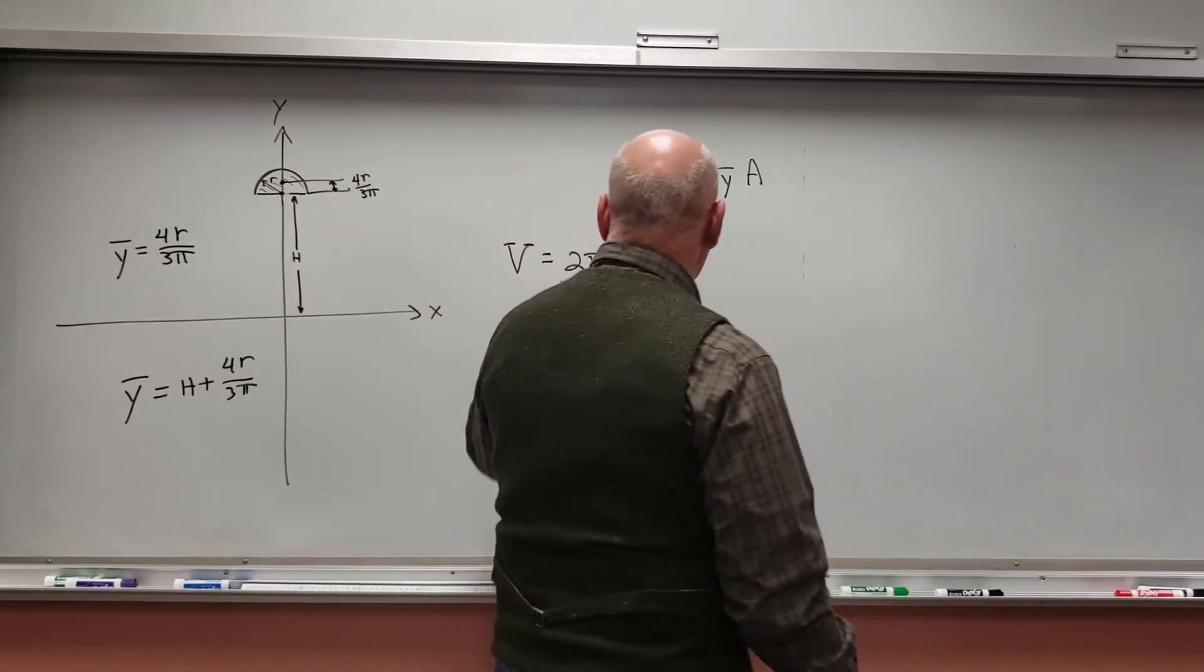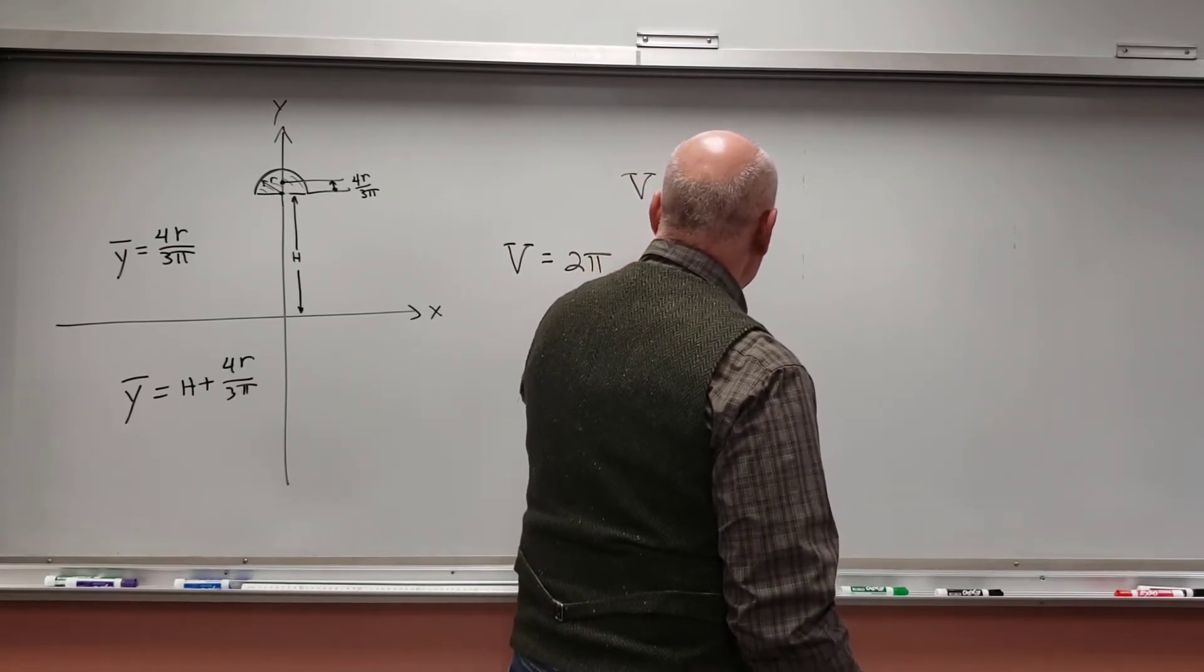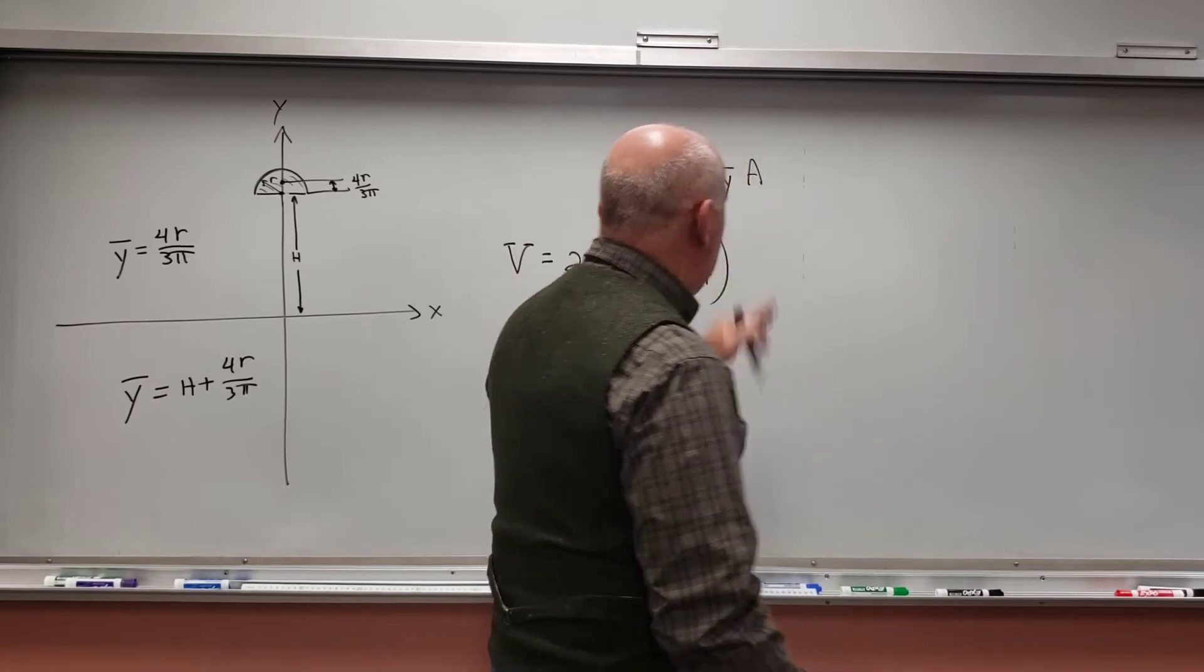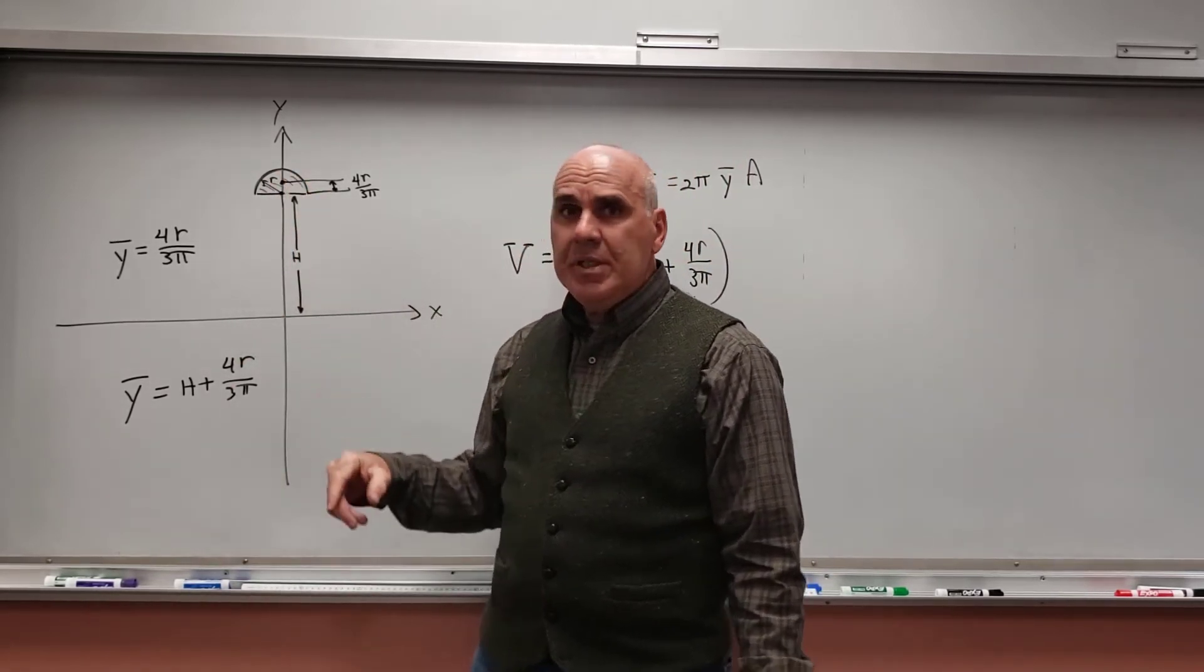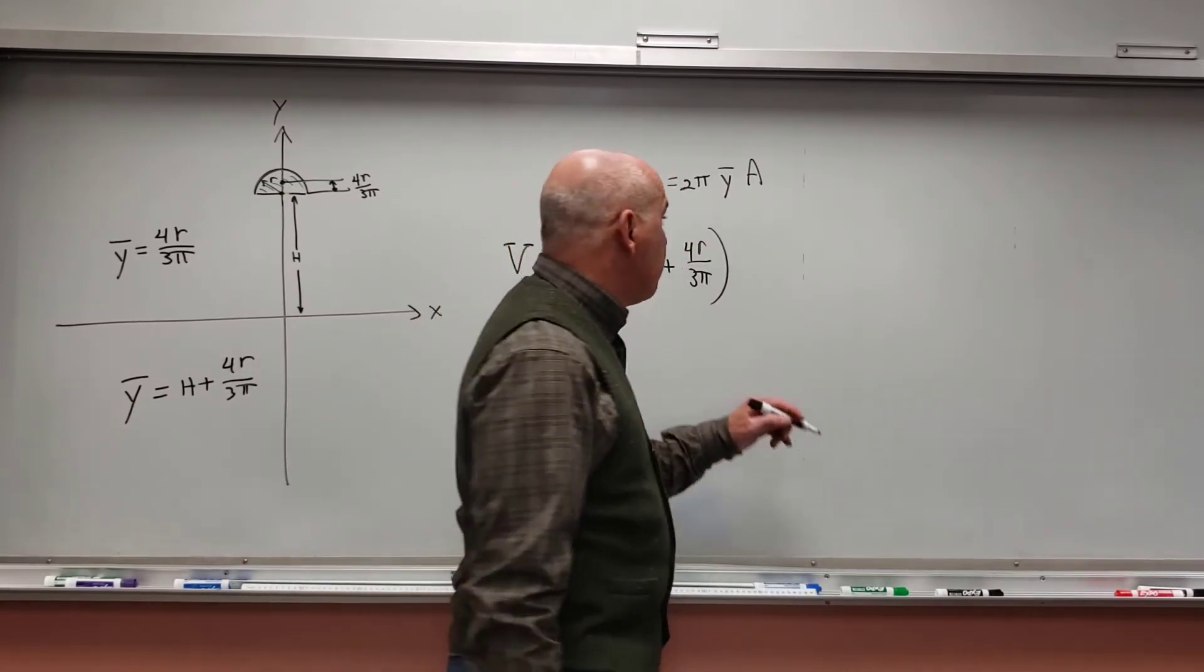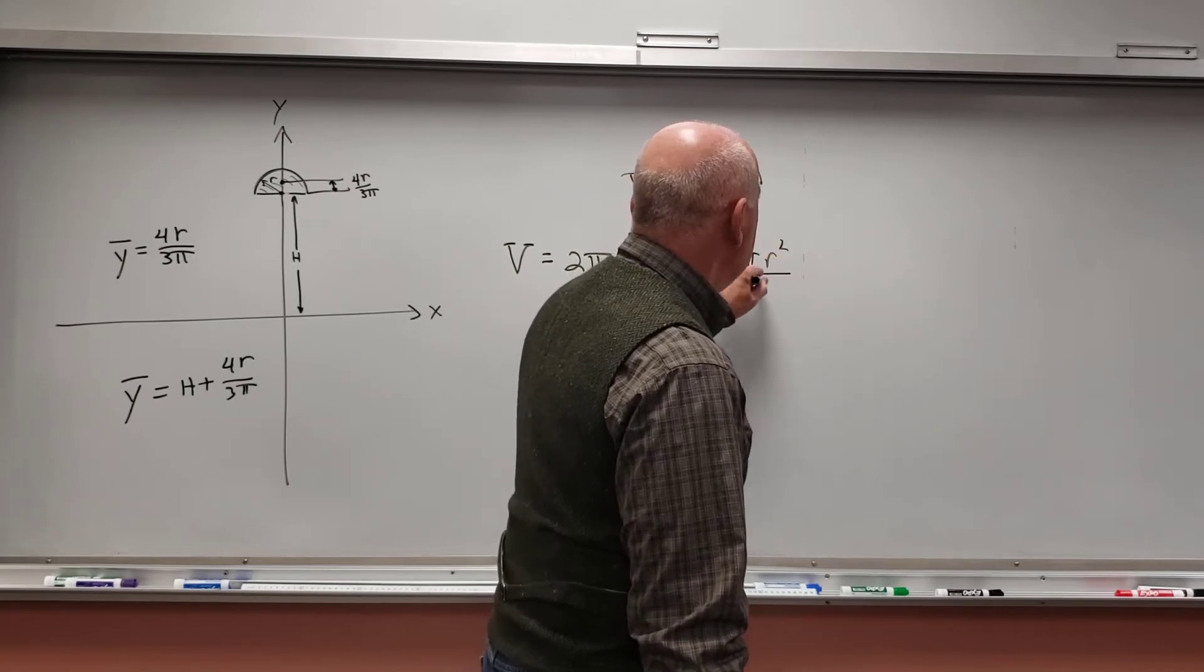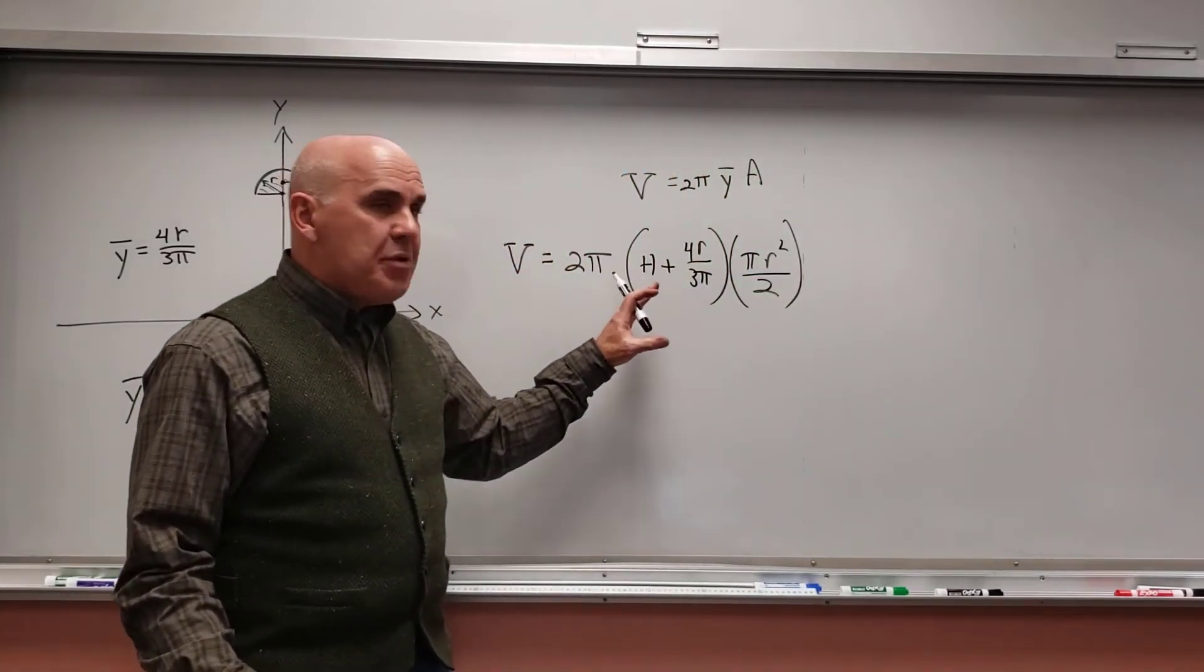So h plus 4r over 3π. That's the y-bar. And then the area. The area of this semicircle is πr² over 2 because it's a semicircle. And that's going to be the volume of the ring.